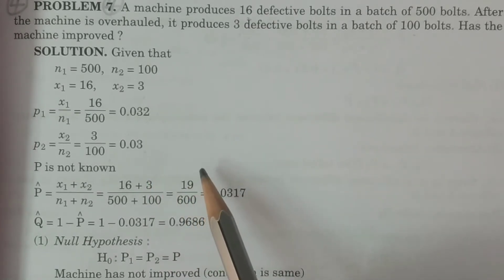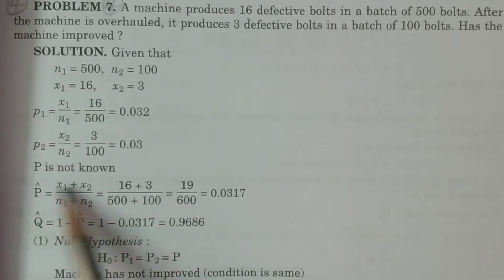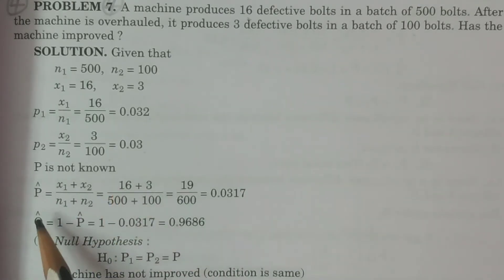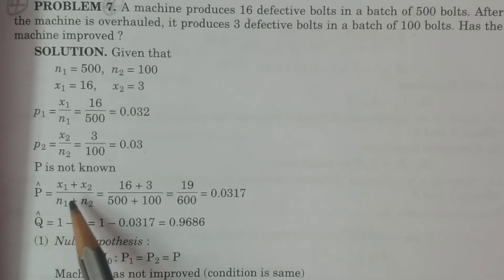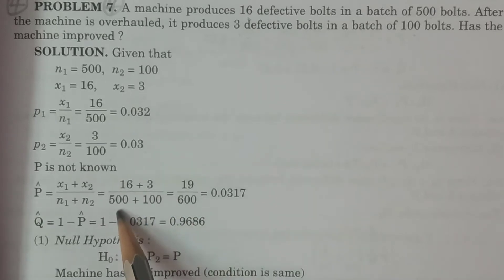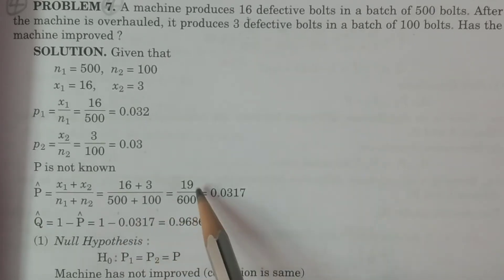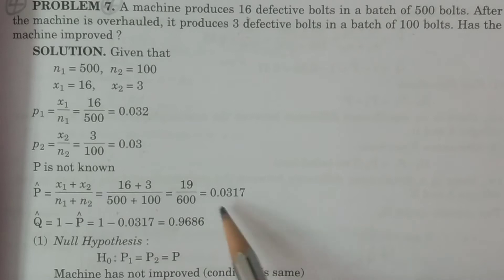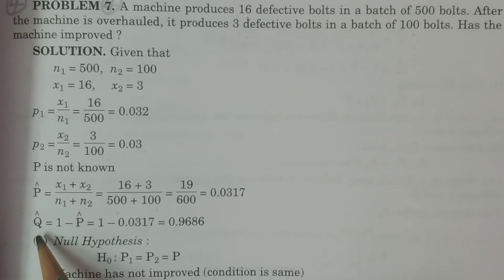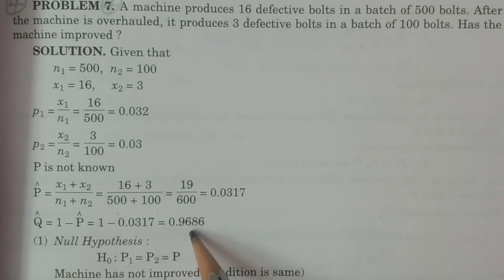Is capital P known? Capital P is not given, so it is not known. Therefore, it is estimated by p-bar = (x1 + x2)/(n1 + n2) = (16 + 3)/(500 + 100) = 19/600 = 0.0317. And q-bar = 1 − p-bar = 0.9683.